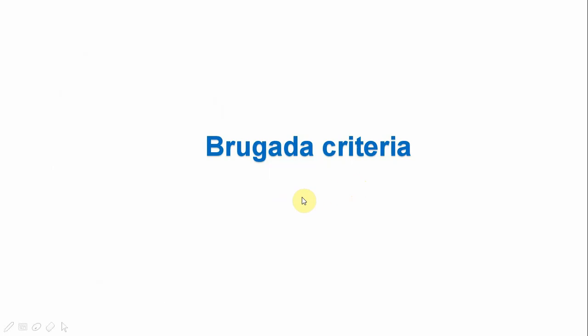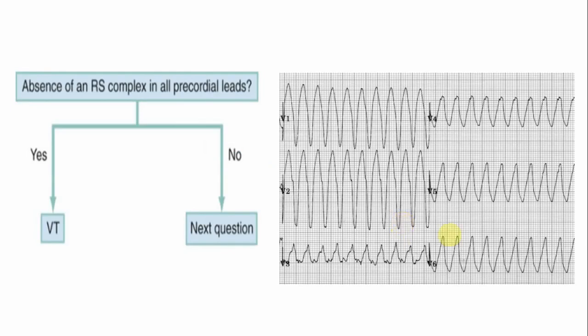Now for the main topic — the Brugada criteria. It has a very high sensitivity of 98% and specificity of 97%, allowing us to both rule in and rule out VT. However, there are about 15 different studies on the Brugada criteria, and the sensitivity and specificity may not be as high as originally advocated, though it is still pretty good. There are four steps to the Brugada algorithm.